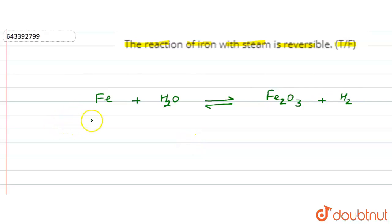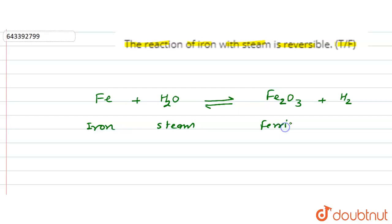Steam reacts with iron to form ferric oxide with the evolution of hydrogen. First of all, we have to balance this reaction. Oxygen: three more on the right side, so multiply by three here. Hydrogen: six more on the left side, multiply by three. Iron atoms: two, so two on the left side. Now this reaction is balanced.